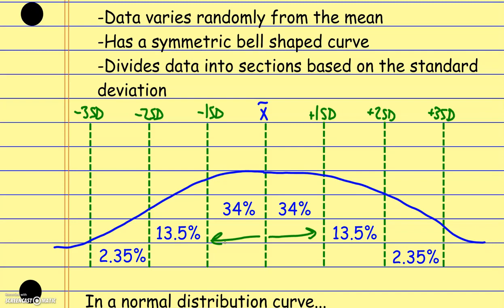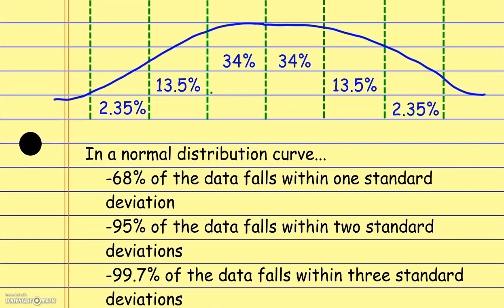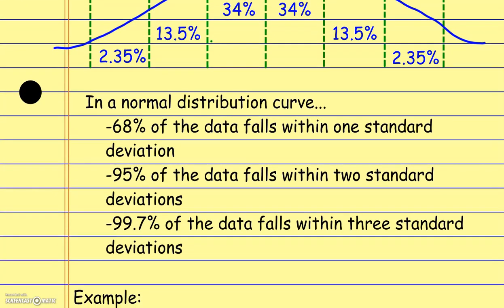Most things tend towards the mean, and as we go further and further out, I get smaller and smaller percentages because fewer things are farther from the mean. Things gravitate towards the mean; as you step farther away, things get more and more sparse. So in a normal distribution curve, 68% of the data falls within one standard deviation, 95% falls within two standard deviations, and 99.7% falls within three standard deviations.